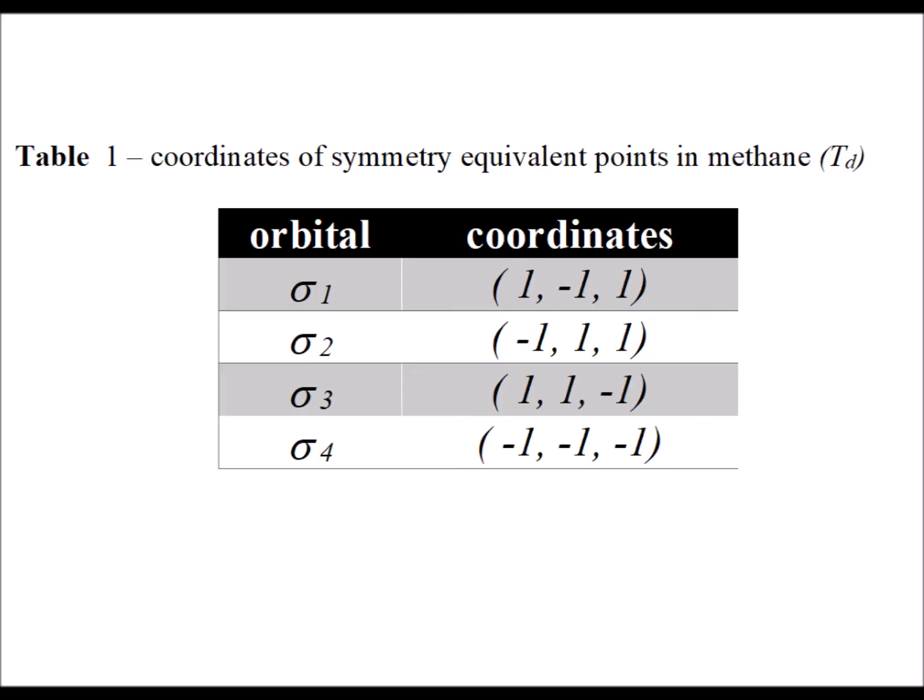In table 1, we list the assigned coordinates for the positions of the hydrogen 1s orbitals, which are symmetry equivalent to each other, in methane. One thing to notice is that for each of these sets of coordinates, we have an odd number of minus signs, which is just a nice way to double check that one has not inadvertently made an error. There are numerous ways to assign these coordinates, consistent with the Td symmetry.